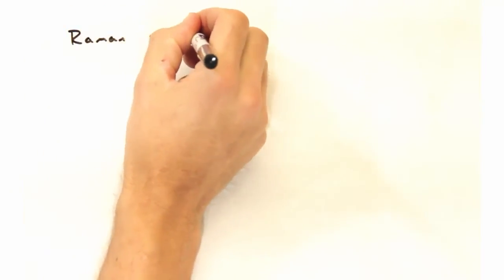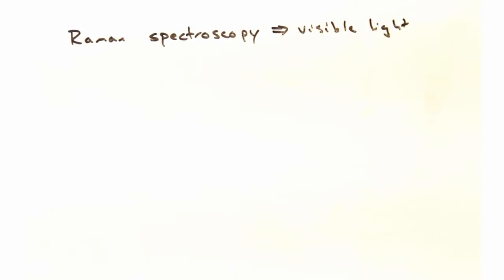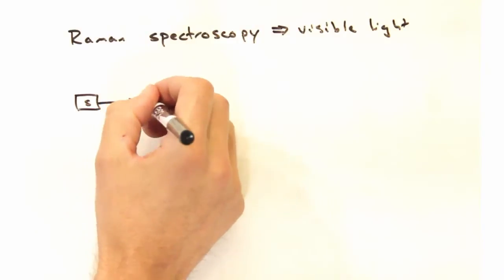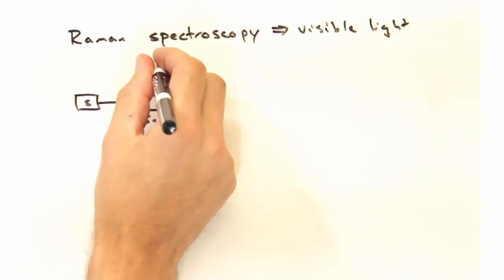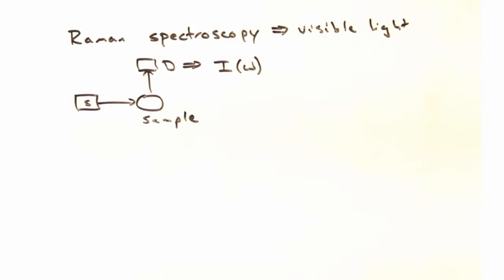So for the rest of this video, we're just going to consider the inelastic scattering of visible light, which is known as Raman spectroscopy. In this case, we're going to use a source like here coming in along the proverbial x-axis and interacting with a sample.